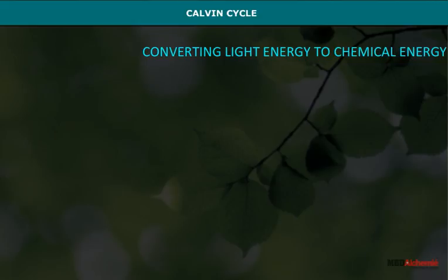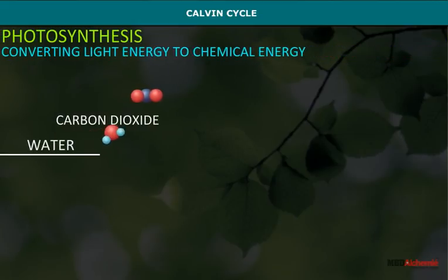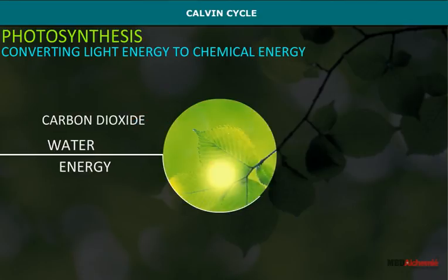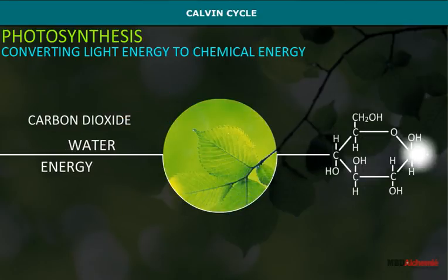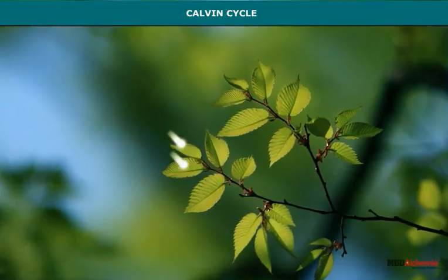Calvin Cycle. The process of Calvin Cycle takes place inside the stroma of chlorophyll. It is also known as the light-independent phase.